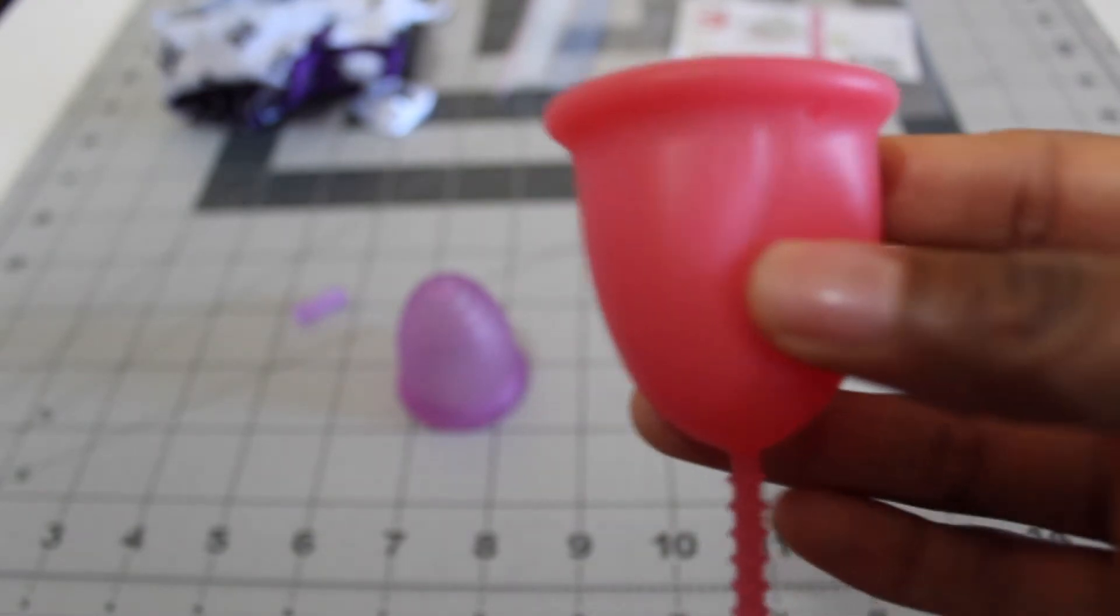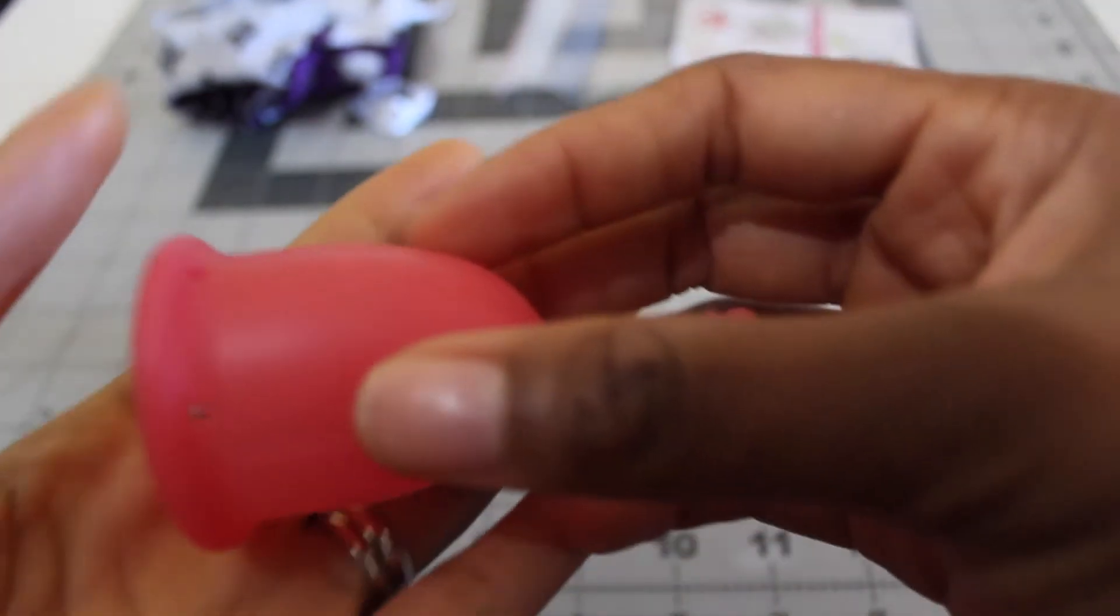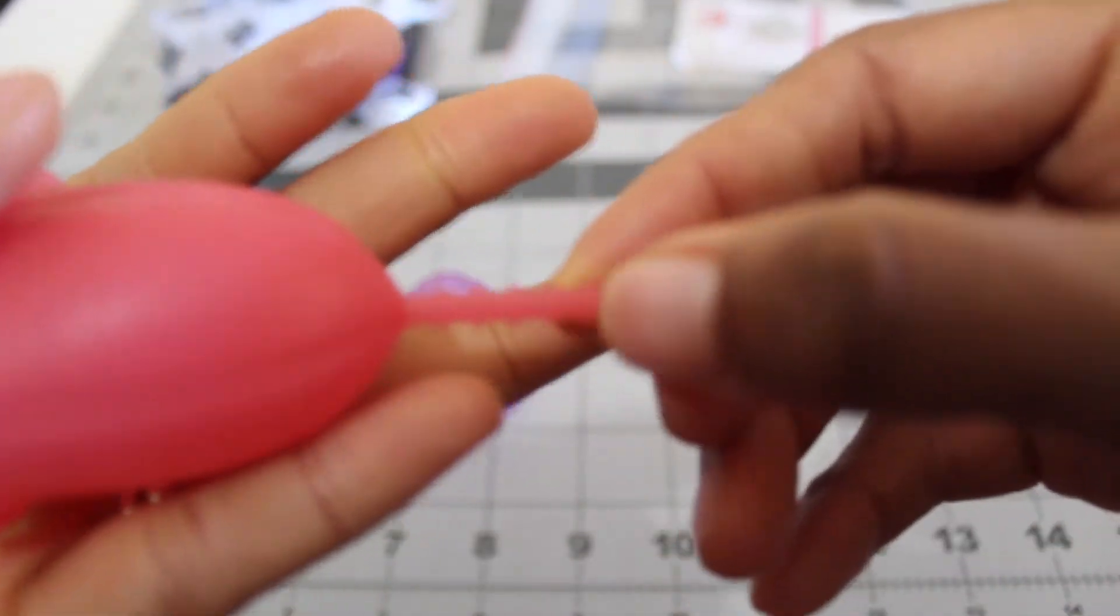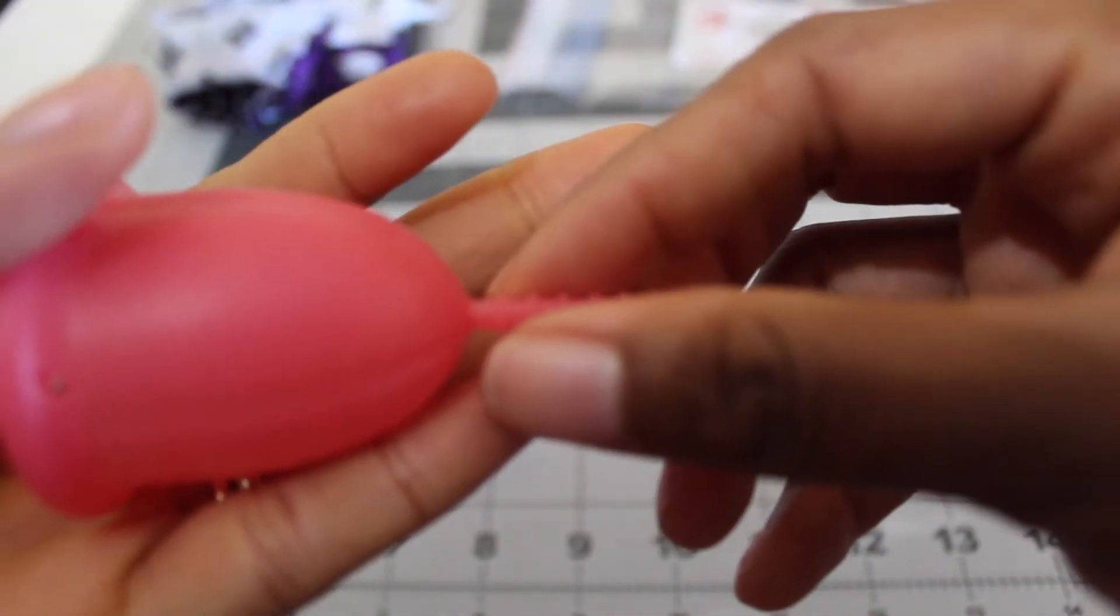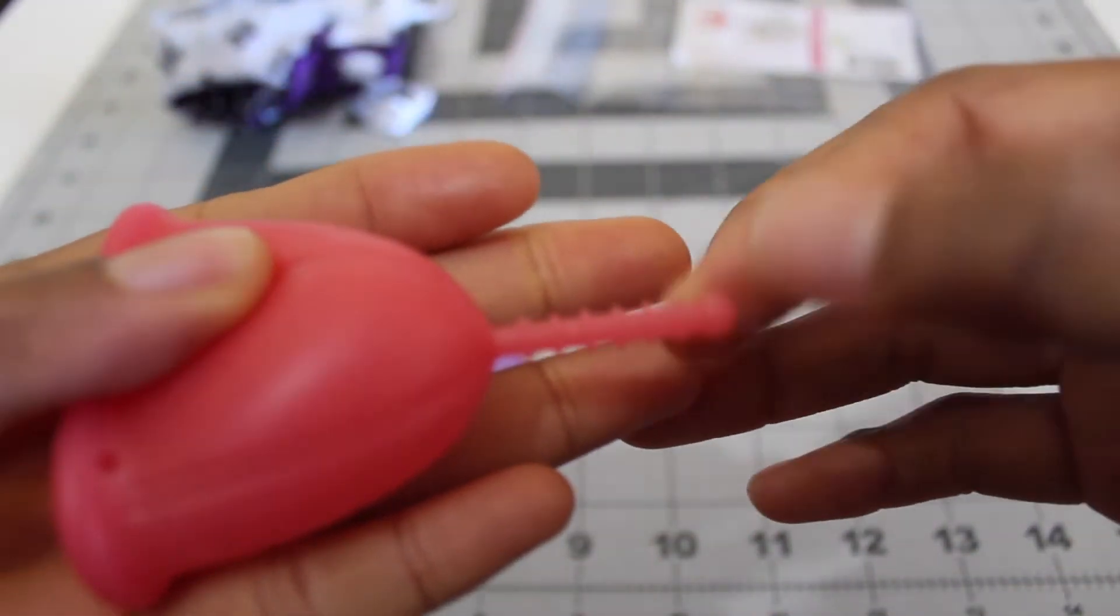So this is the Sabelle cup. Again I just got this one. I haven't tried it yet. Excuse me. So first thing you notice is the stem. A nice long stem. Really good grips on it. It's not, your fingers are not gonna slip off of this. You're gonna be able to get a good hold on it. It has this ball at the end.